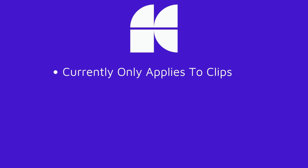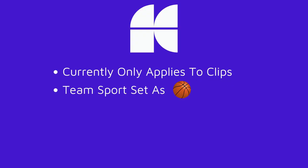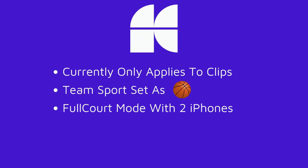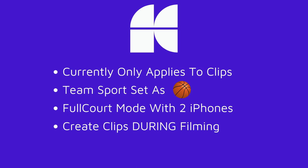Currently AI only applies to clips. In order to get the AI to apply to your clips, your team sport must be set to basketball. You have to film in full-court mode with two phones, and you have to create clips during filming.